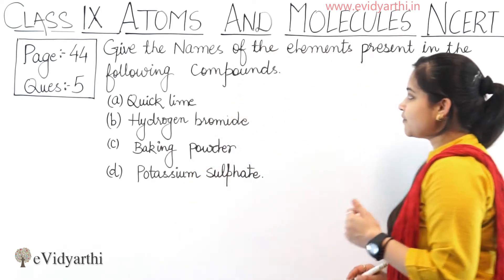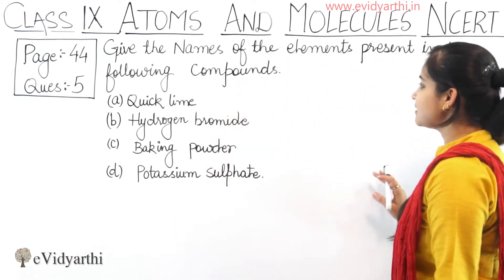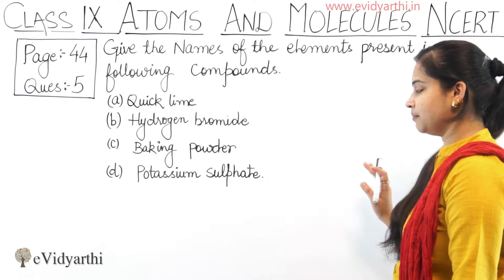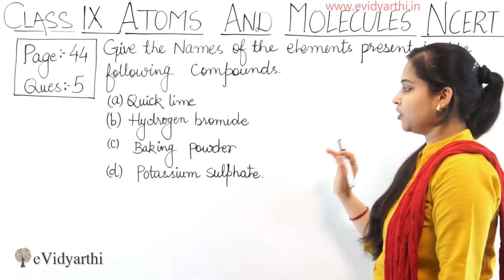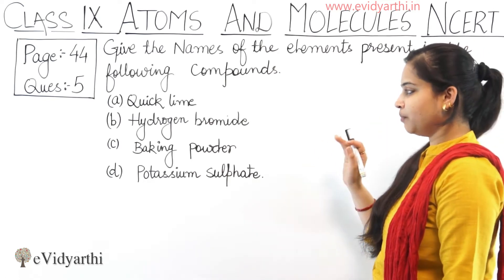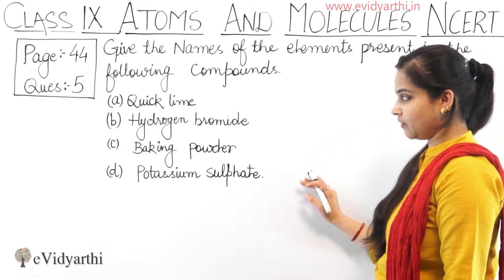The question says: give the names of the elements present in the following compounds — Quick Lime, Hydrogen Bromide, Baking Powder, Potassium Sulphate.